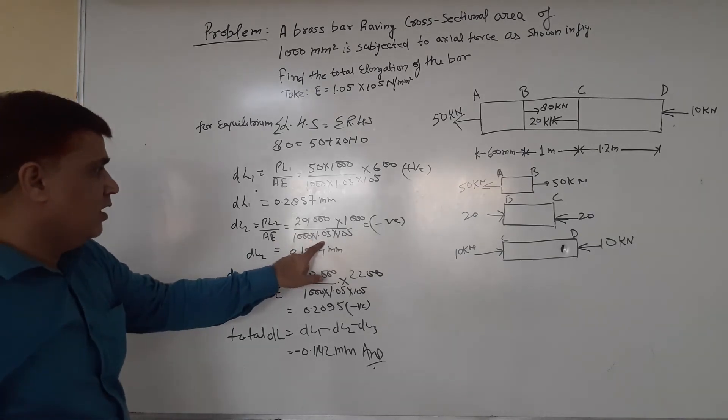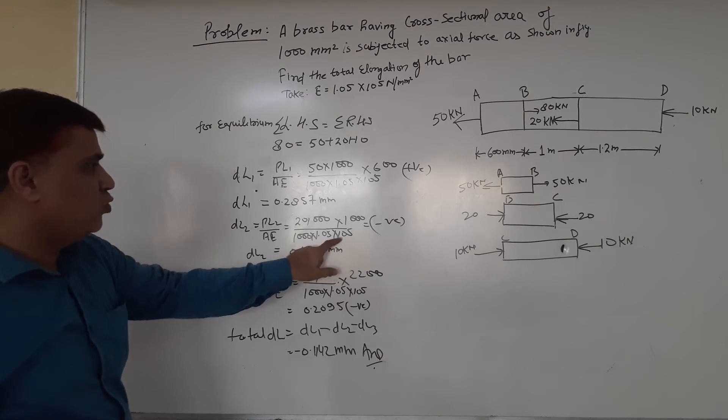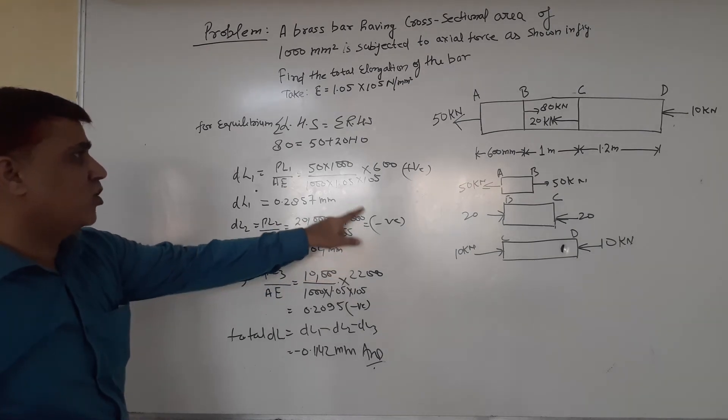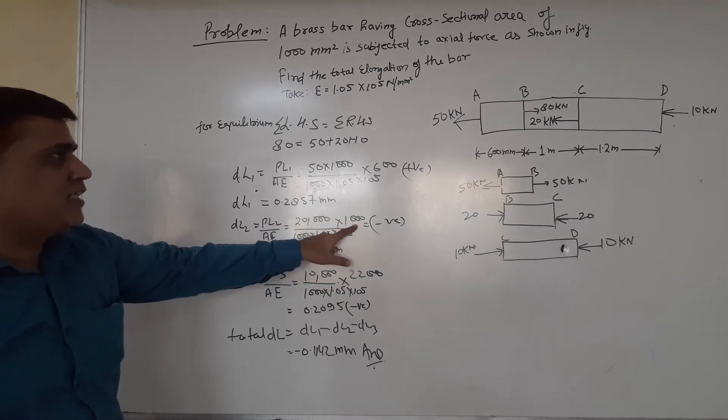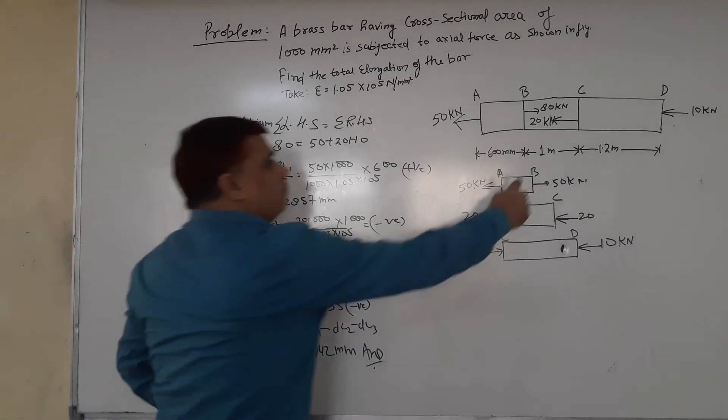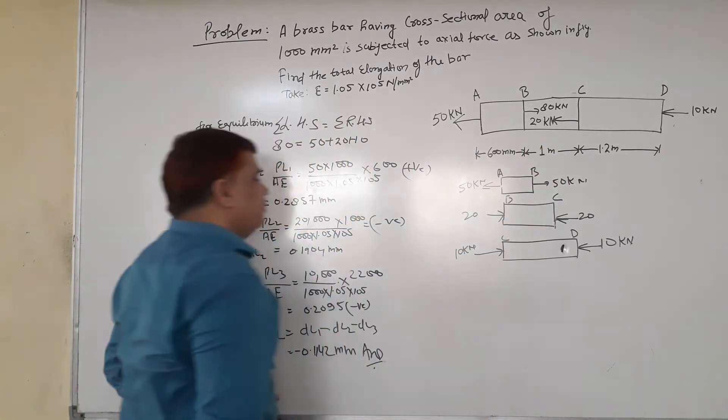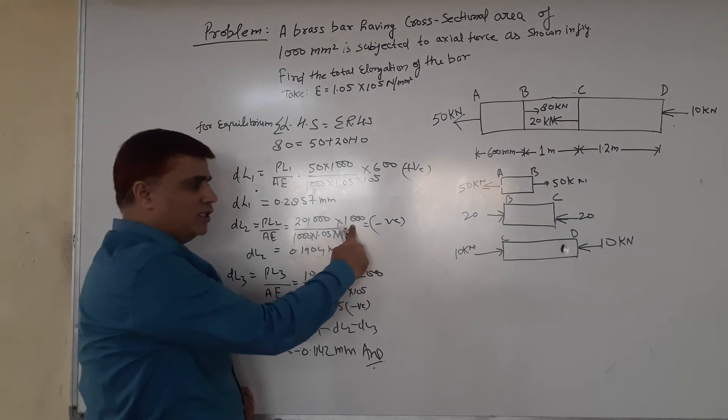That's 1.05 × 10⁵, multiplied by the length of this section. This section length is given as 1 meter, which should be converted to millimeters, so we multiply by 1000.